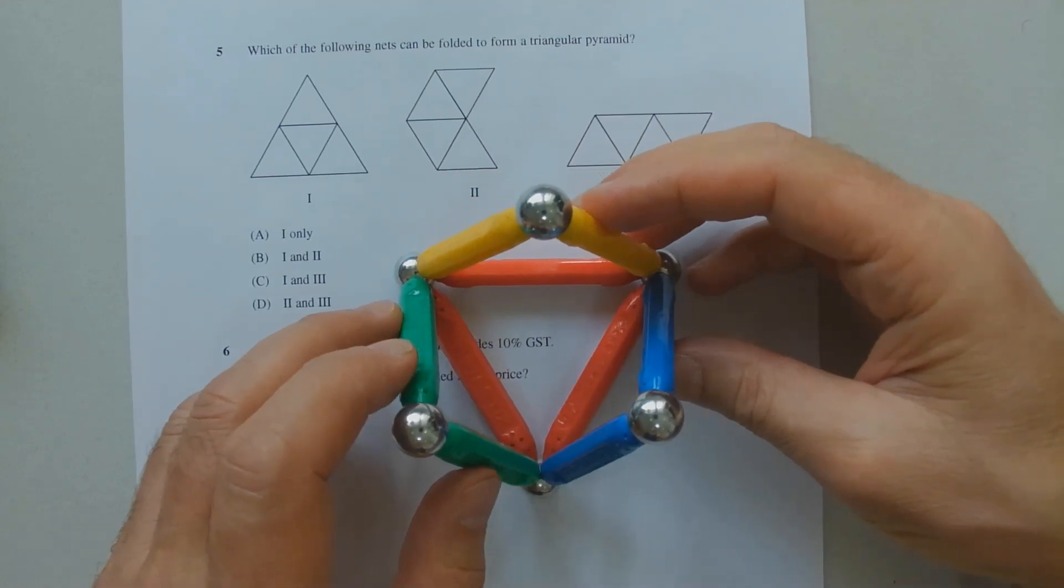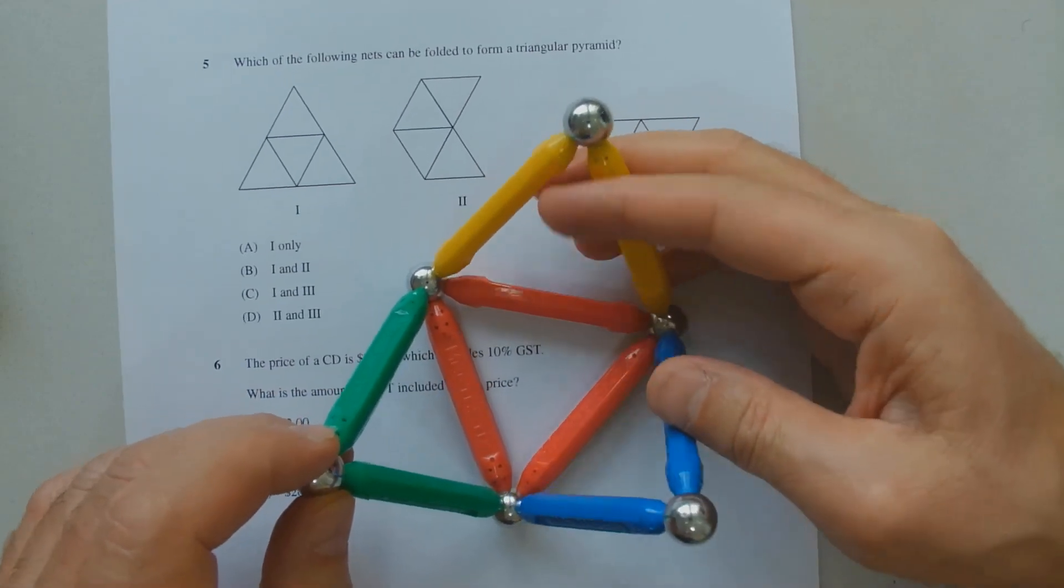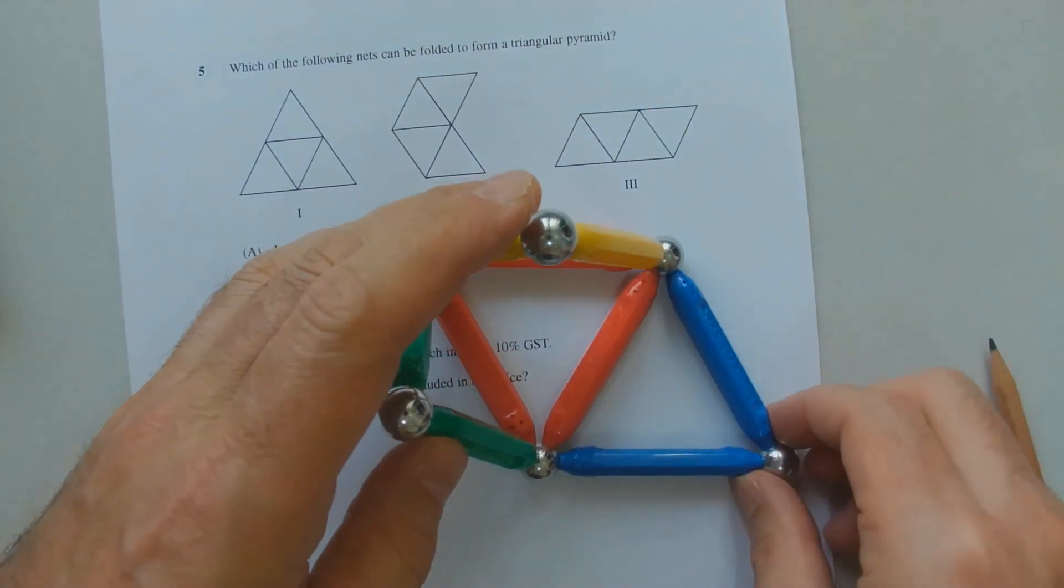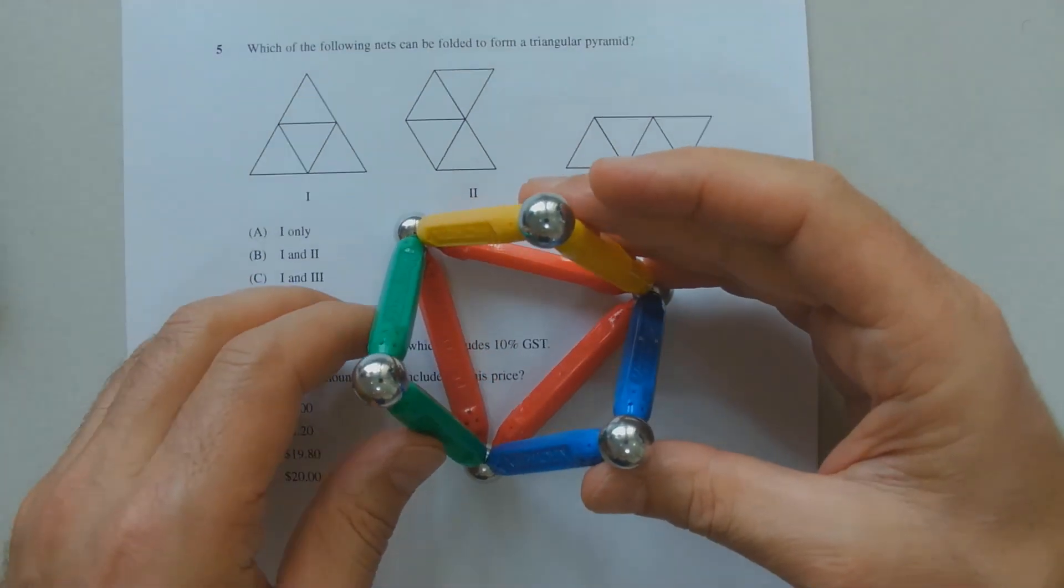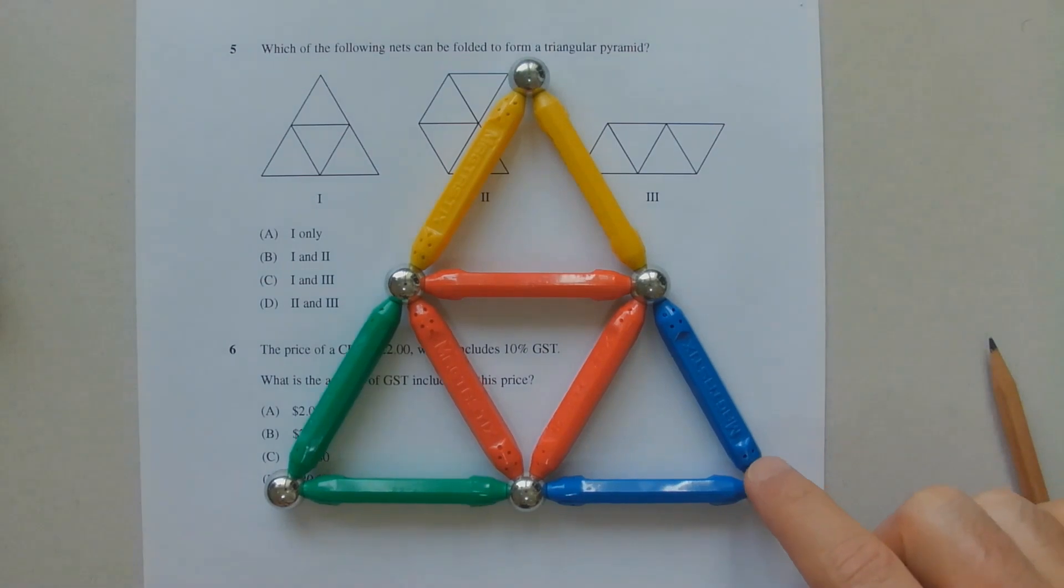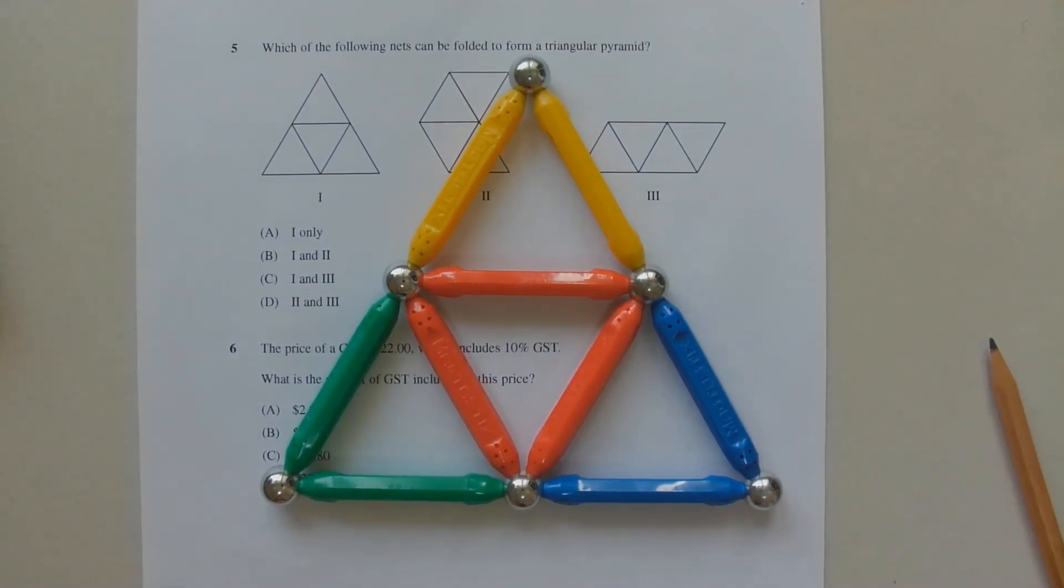Now they won't fold all the way such that the three points join at the centre, but we can see that if we were to join them up so that they all connect, we will form a triangular pyramid, with these outer points here coming together to form the apex, or the top of that triangular pyramid. So net number one is one of the possible nets that will form a triangular pyramid.